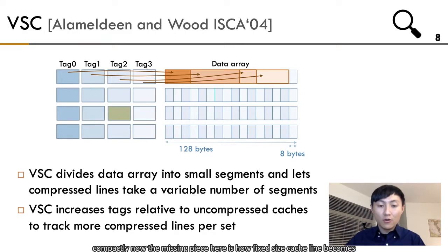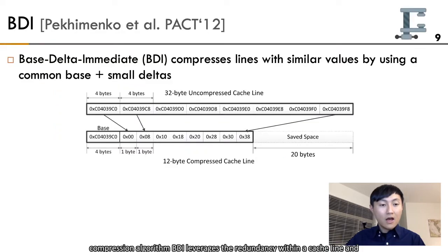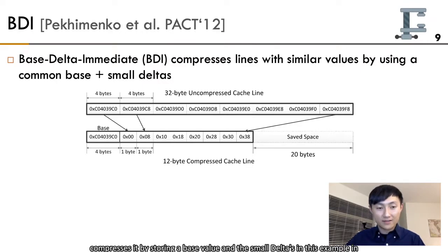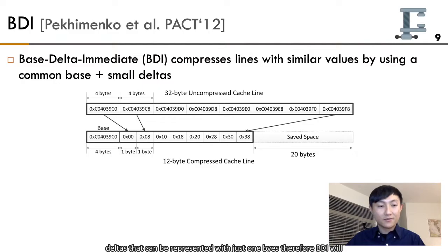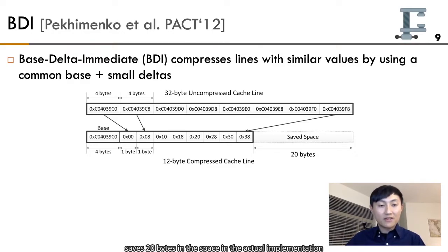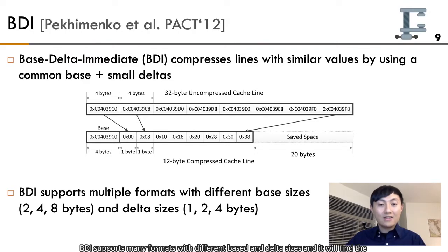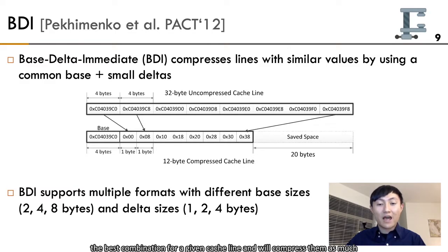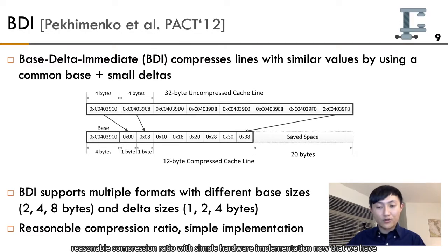The missing piece is how fixed-sized cache lines become variable-sized blocks, which brings us to the BDI compression algorithm. BDI leverages the redundancy within a cache line and compresses it by storing a base value and small deltas. In a 32-byte uncompressed cache line, every 4-byte value may have a relatively small delta representable with just 1 byte. Therefore, BDI compresses this cache line into a 4-byte base value with eight 1-byte deltas, saving 20 bytes. In the actual implementation, BDI supports many formats with different base and delta sizes, finds the best combination for a given cache line, and compresses it as much as possible. The advantage of BDI is that it provides a reasonable compression ratio with simple hardware implementation.